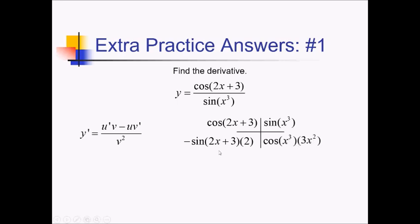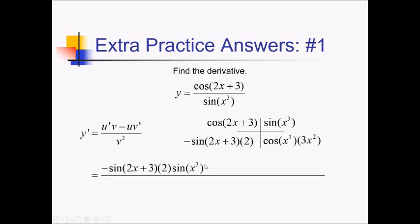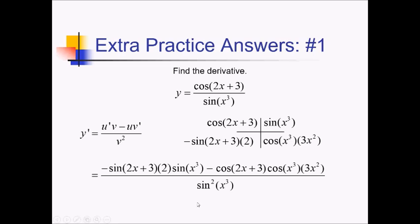Multiplying it all out now, we have all this stuff down here times sine of x cubed, and then going the other way, we've got minus cosine of 2x plus 3, times cosine of x cubed, times 3x squared. All of it divided by v squared, so sine squared of x cubed. And we didn't have to simplify, so this is it.